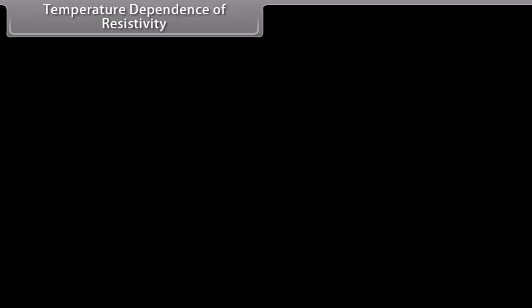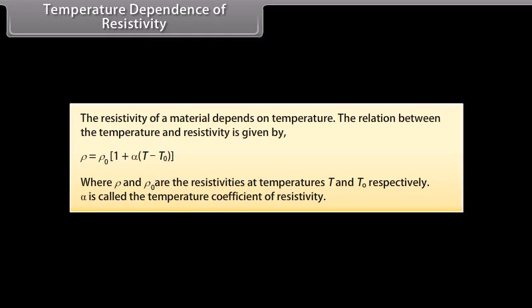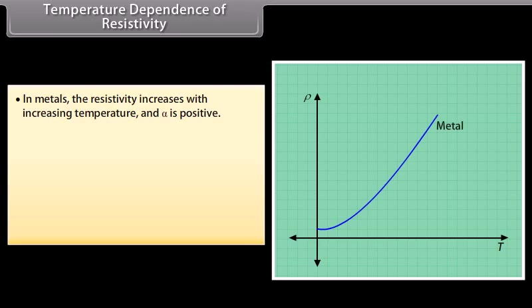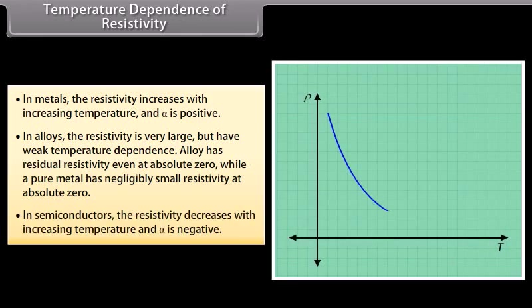The resistivity of a material depends on temperature. The relation is ρ = ρ₀[1 + α(T − T₀)], where ρ and ρ₀ are resistivities at temperatures T and T₀ respectively, and α is the temperature coefficient of resistivity. In metals, resistivity increases with temperature and α is positive. In alloys, resistivity is large but has weak temperature dependence. In semiconductors, resistivity decreases with increasing temperature and α is negative.